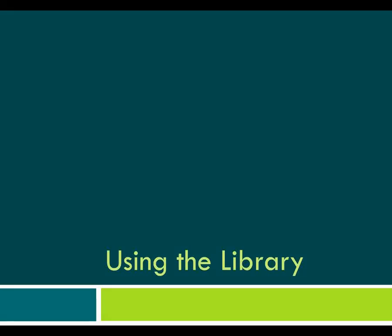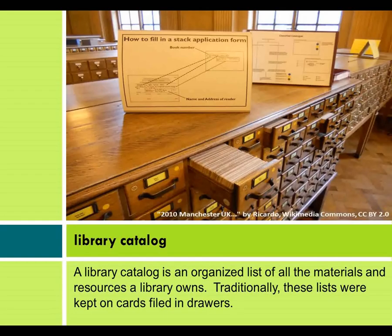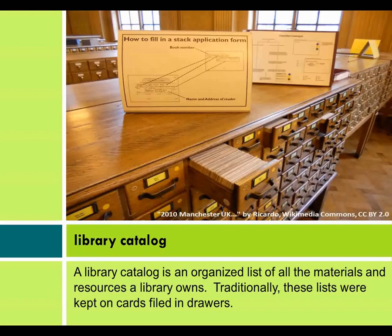Using the Library. A library catalog is an organized list of all the materials and resources a library owns. Traditionally, these lists were kept on cards filed in drawers.